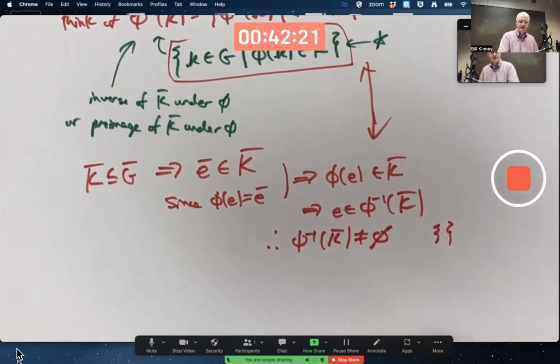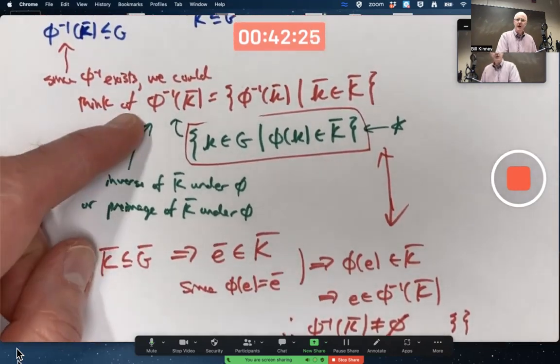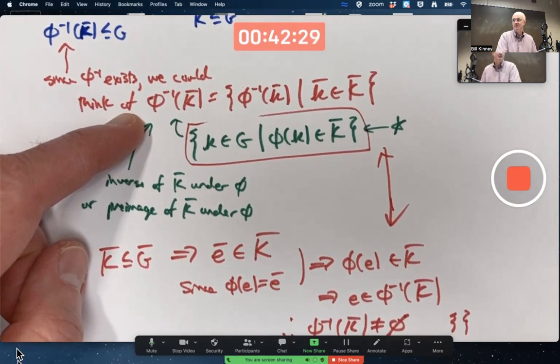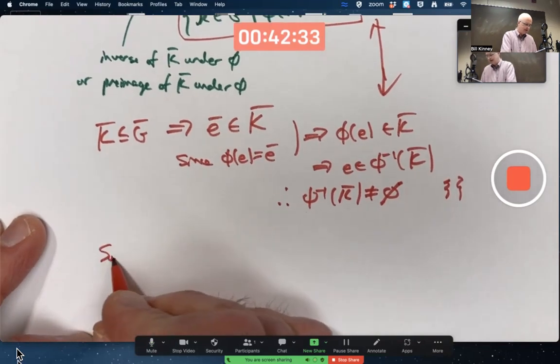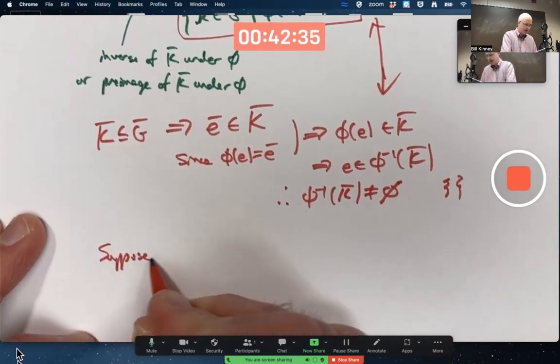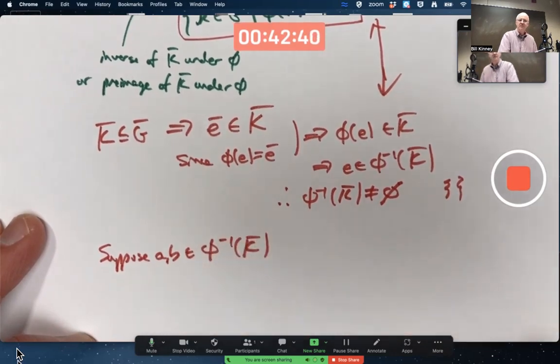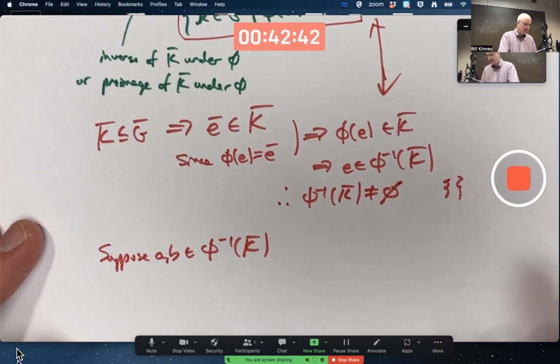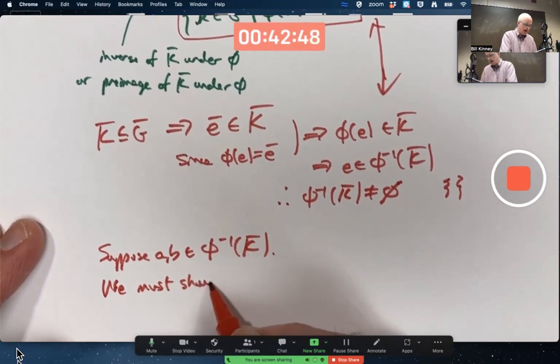So it's not empty. Now we get to the first step of the one subgroup test. Given two elements A and B in here is A B inverse in there as well. Suppose A and B are in that preimage. We must show